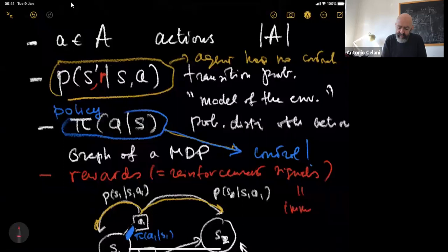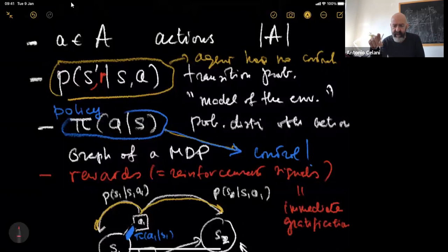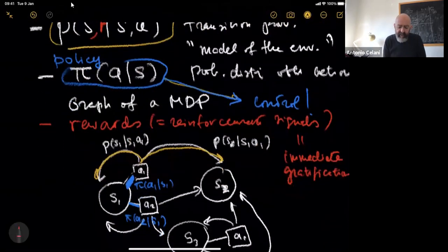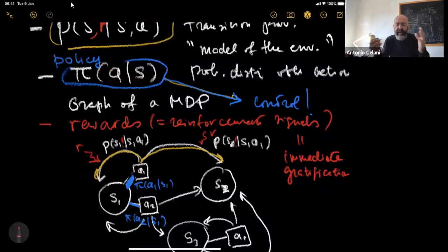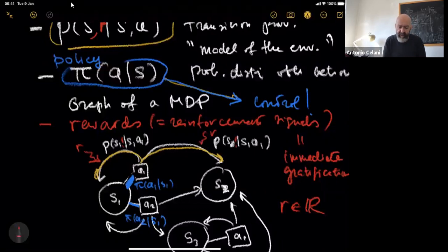Rewards are immediate gratifications. As we will see, these are not necessarily the goal in themselves in reinforcement learning, but rewards are important. Every time that I make a transition, on top of that there is a certain probability of getting some reward R. Every one of those transitions can yield a different reward. Rewards are real numbers — one-dimensional feedback from the system telling you how good you're doing in the process.